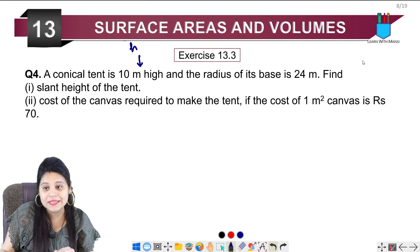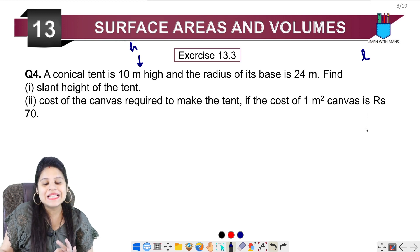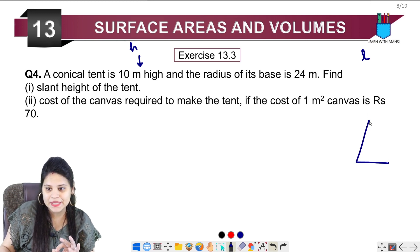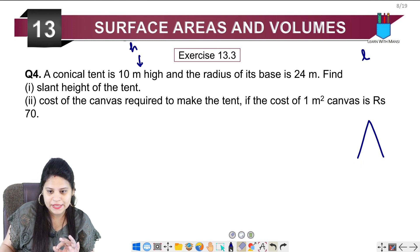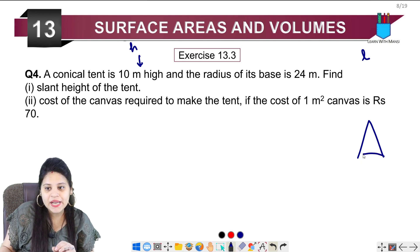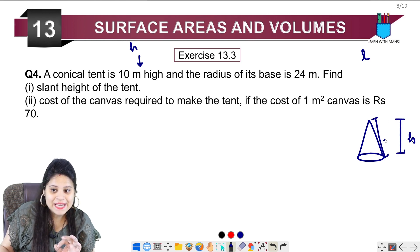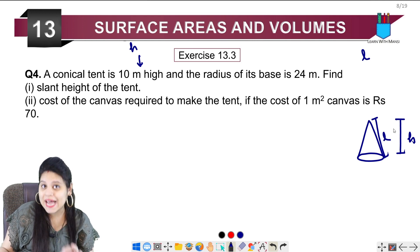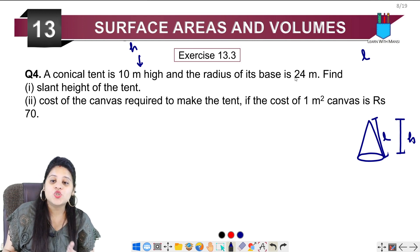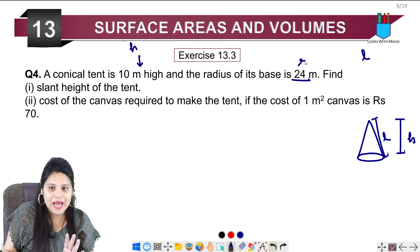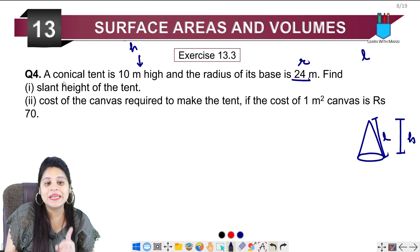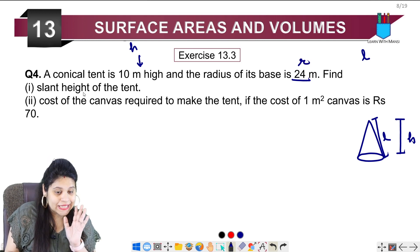When we talk about the slant height, let me tell you a simple thing here. This is the height and this is the slant height. We always talk about slant height. So we have base radius r given and h given. We have to start with slant height.